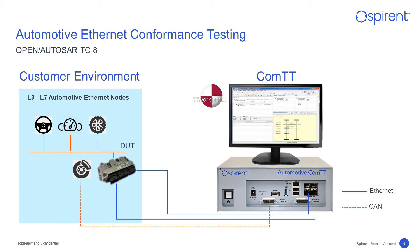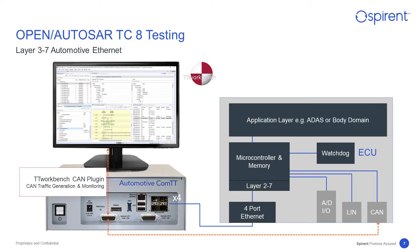You can also check CAN communication interaction with Ethernet traffic. TT Workbench is used to run predefined test cases implemented in the standardized test specification language TTCN3 for conformance behavior. The CAN plugin as a TT Workbench extension can be used to monitor and generate CAN traffic in parallel, so you can check the interaction between two communication channels.